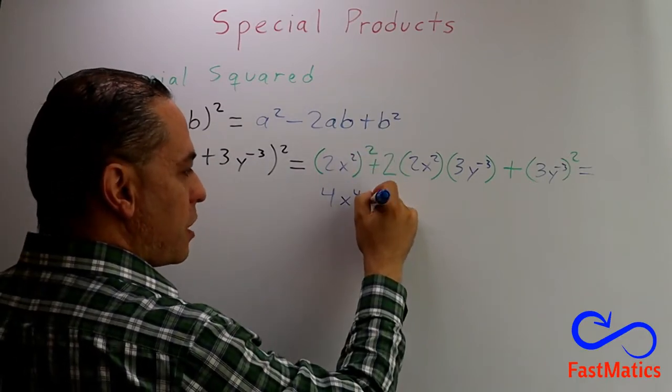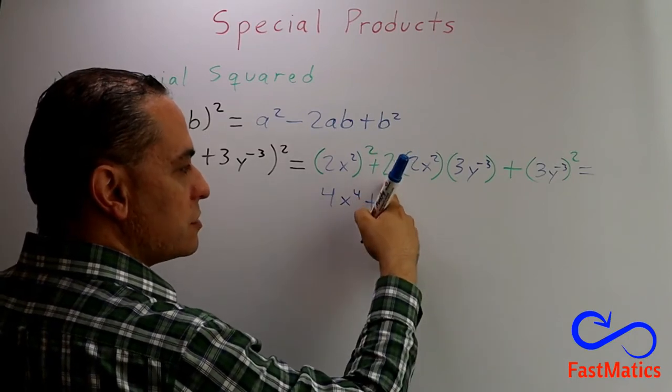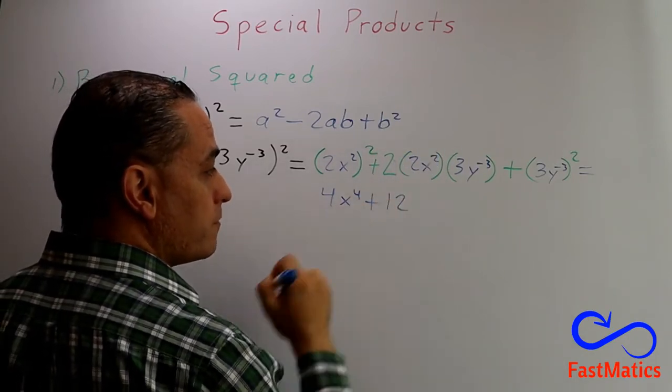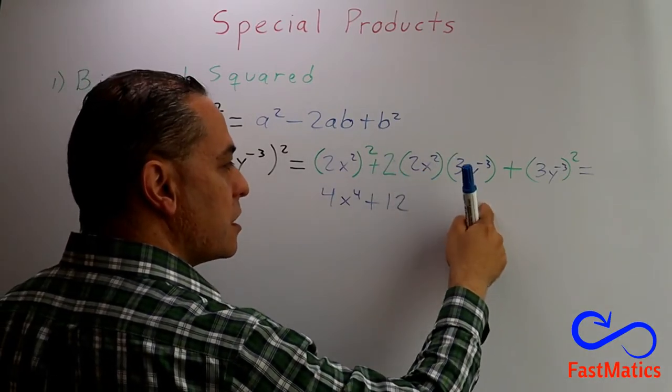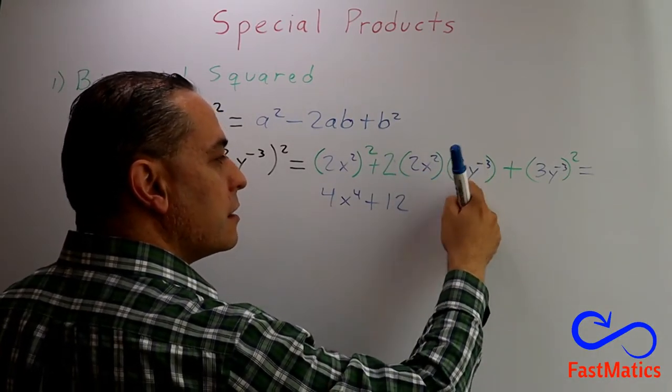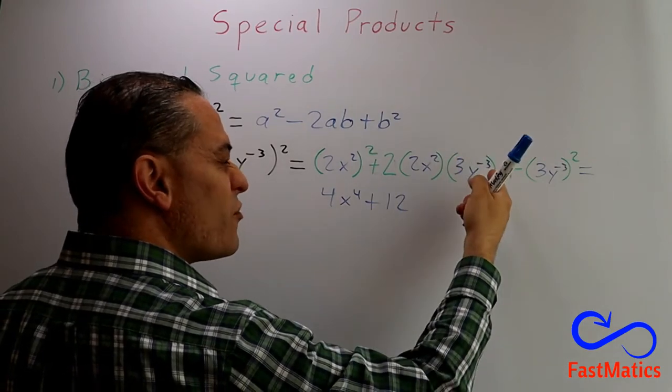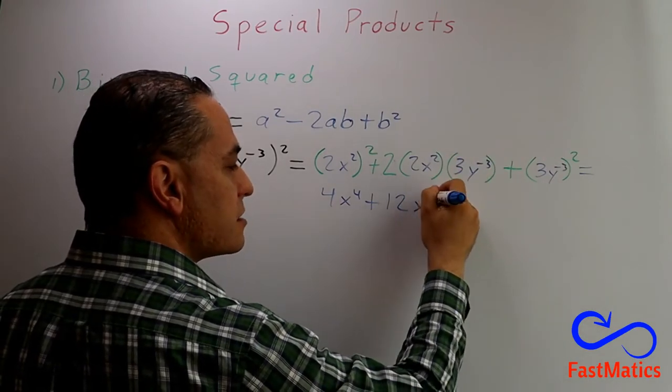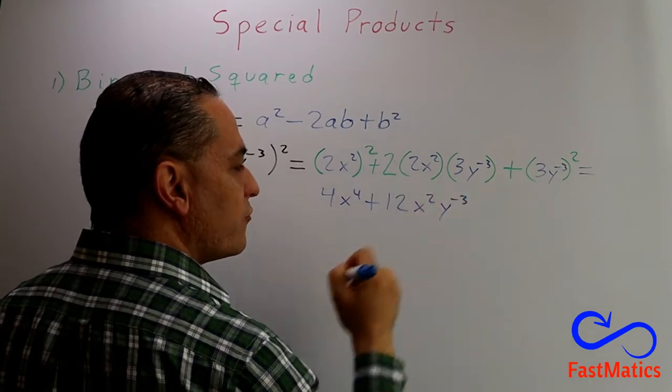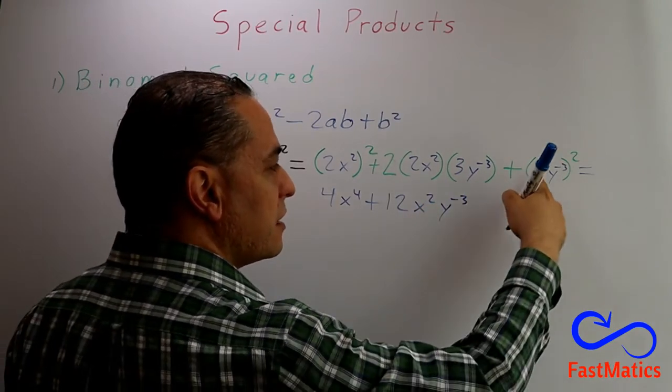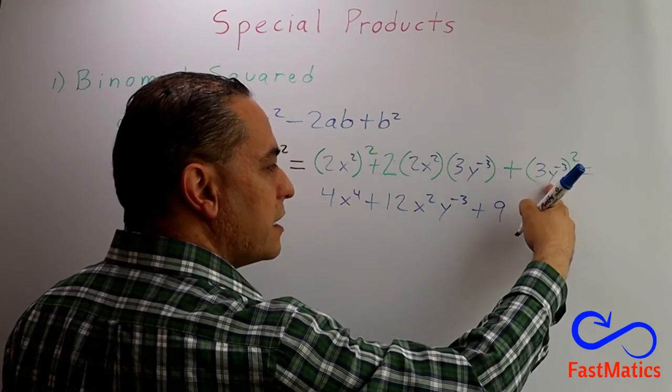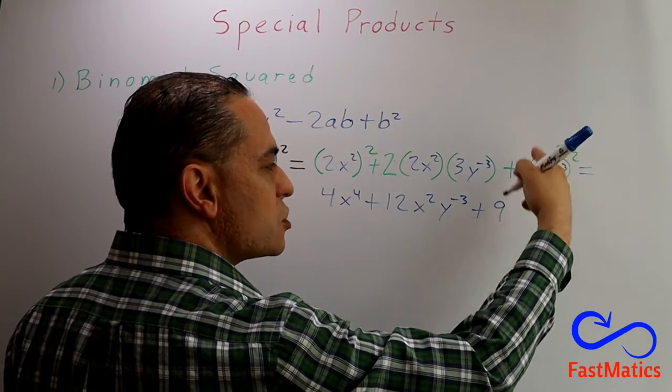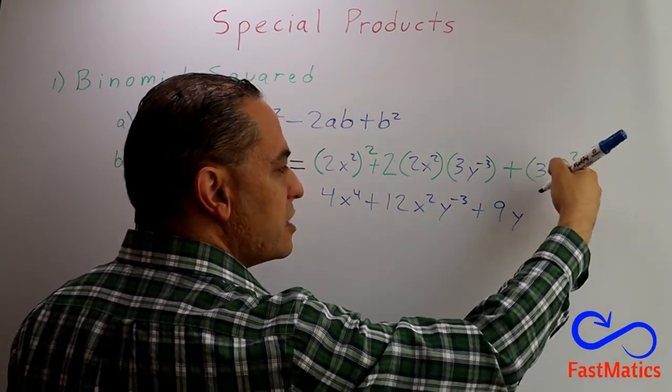After that, plus. 2 times 2 times 3, 12. x squared times y to the power of negative 3 is x squared y to the power of negative 3. And finally, 3 squared is 9. y to the power of negative 3 squared is, you multiply the exponents, negative 6.